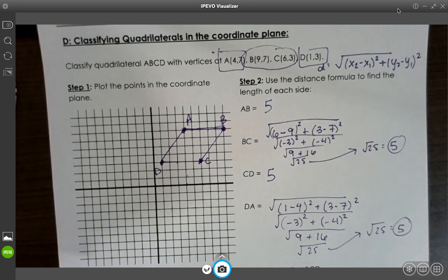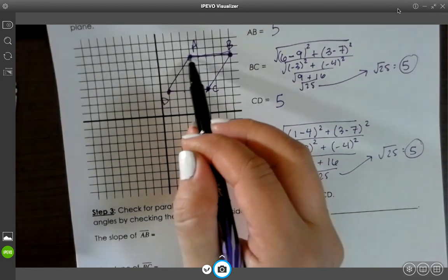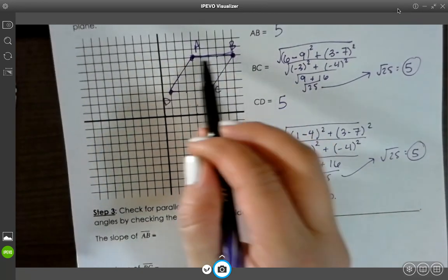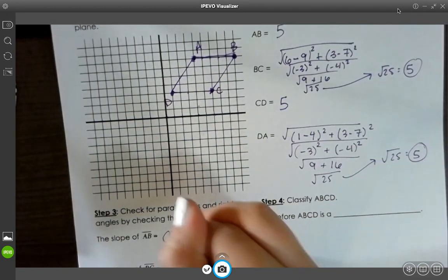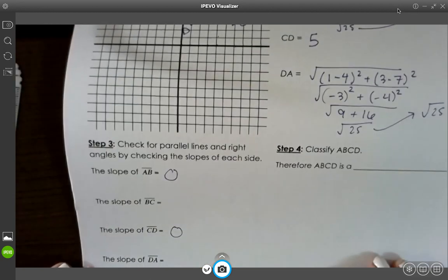Now I'm noticing that all of these sides are the same. But now I need to check if they're parallel and perpendicular. So the slope of AB, when it's a horizontal line, that slope is 0. So for AB and CD, the slope is 0.